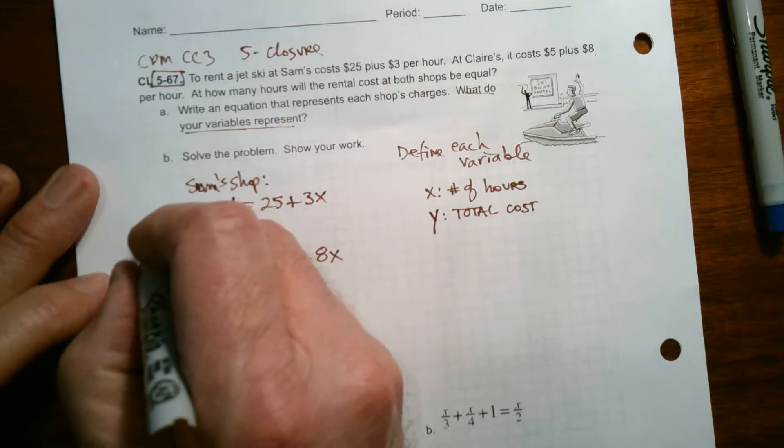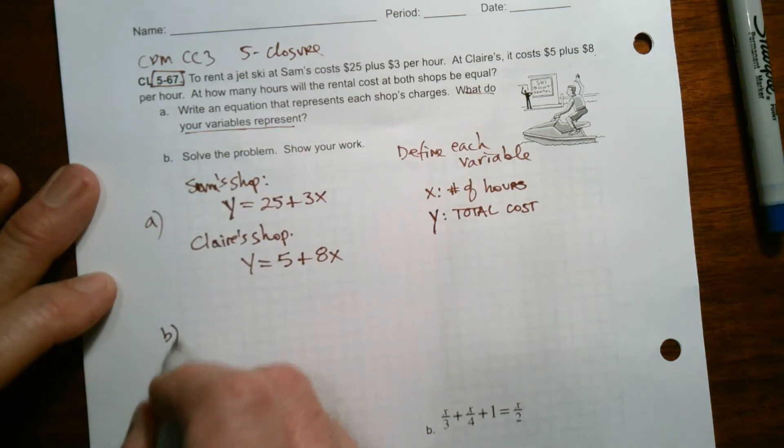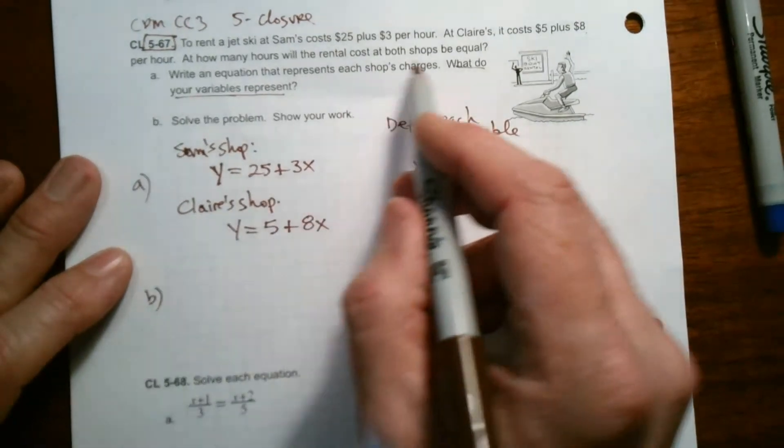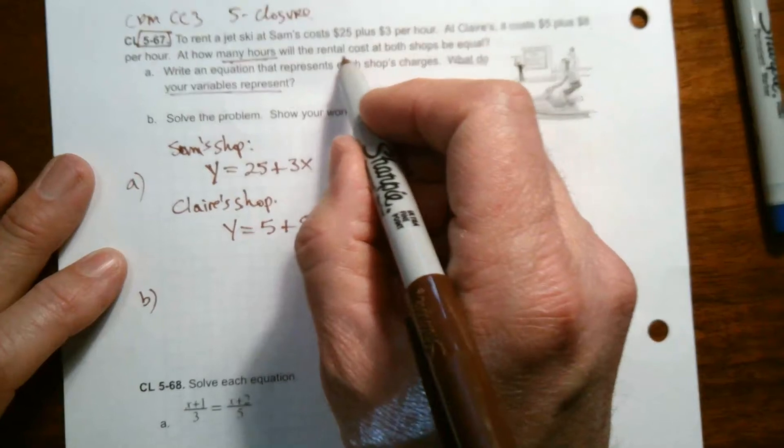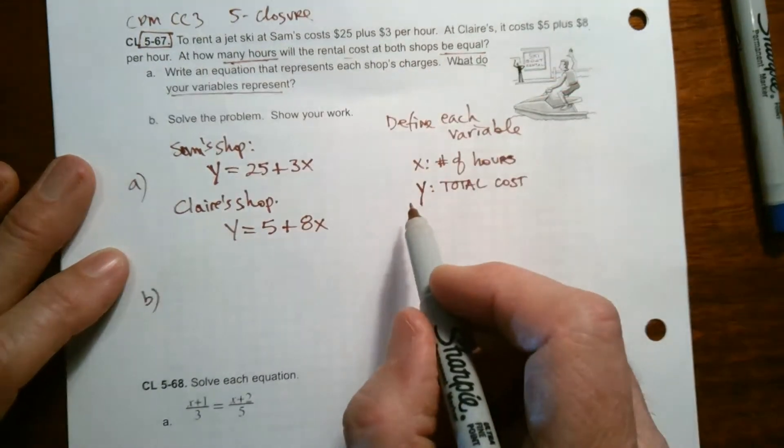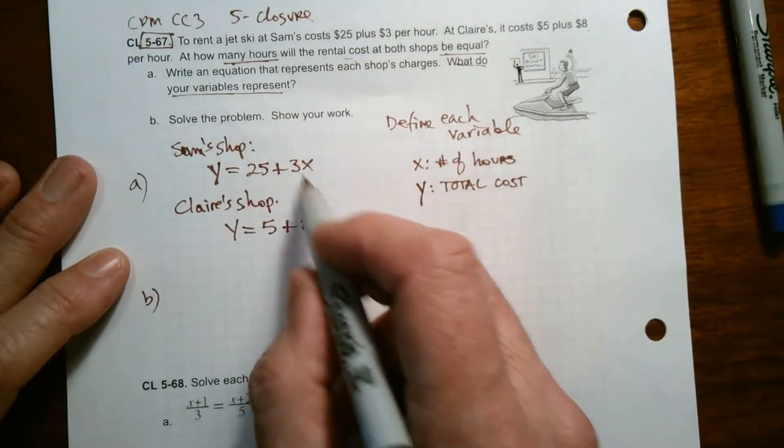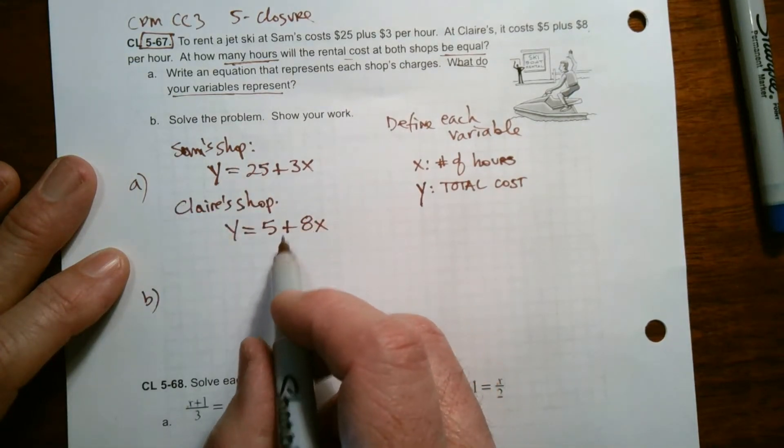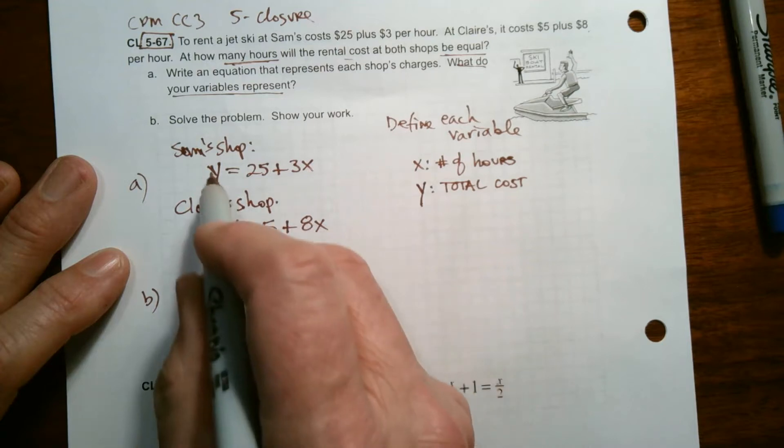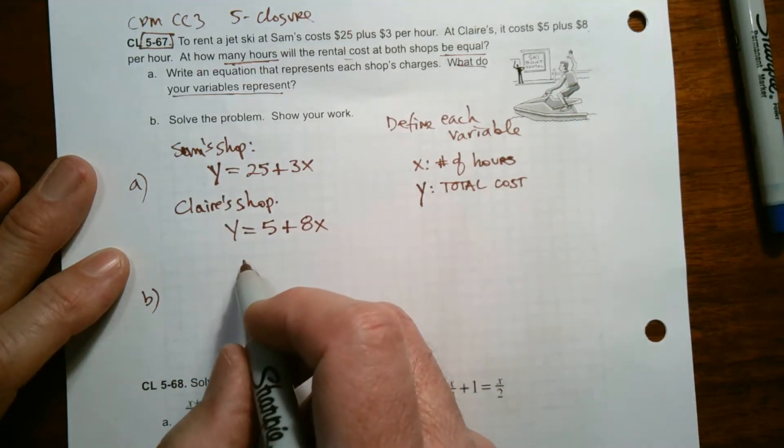So this part really is part A. So then part B wants us to solve the problem. So in order to find where the, because we want to find out how many hours will the rent costs be equal. So what is this? What is the solution to this system? To solve this system, we're going to use the equal values method, which means I want to find what X makes both of those Y's the same.